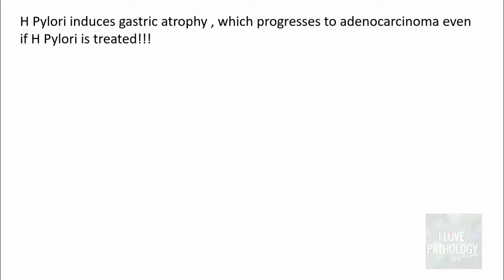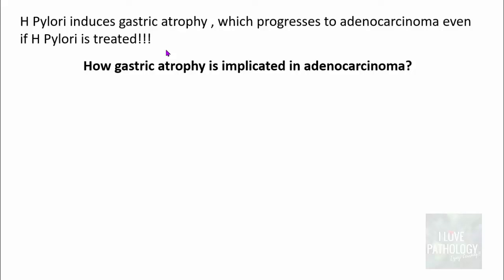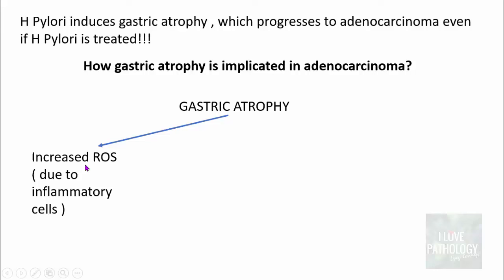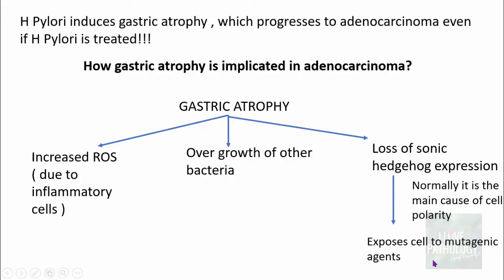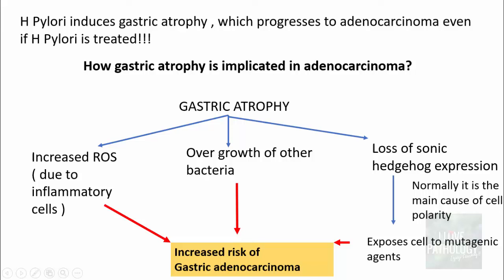H. pylori induces gastric atrophy, which progresses to adenocarcinoma even if H. pylori is treated. Gastric atrophy is implicated in adenocarcinoma development through three mechanisms: first, increased reactive oxygen species due to the inflammatory cells already present in the gastric mucosa; second, overgrowth of other bacteria; and third, loss of sonic hedgehog expression, which is the main cause of cell polarity — its loss exposes cells to mutagenic agents. The combined effect of all three increases the risk of gastric adenocarcinoma development.